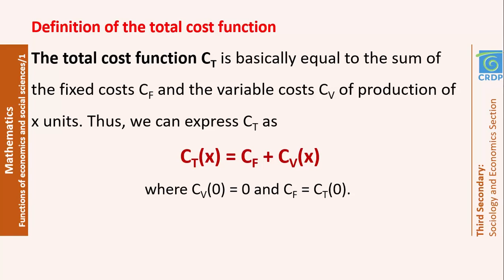Note that if you replace x by 0, the variable cost is 0, since it depends on the quantity produced. If I'm not producing any items, I'm not paying any extra expenses for the production — all what I'm paying will be the fixed cost. This is why Cf, the fixed cost, will be equal to the total cost when x is equal to 0.